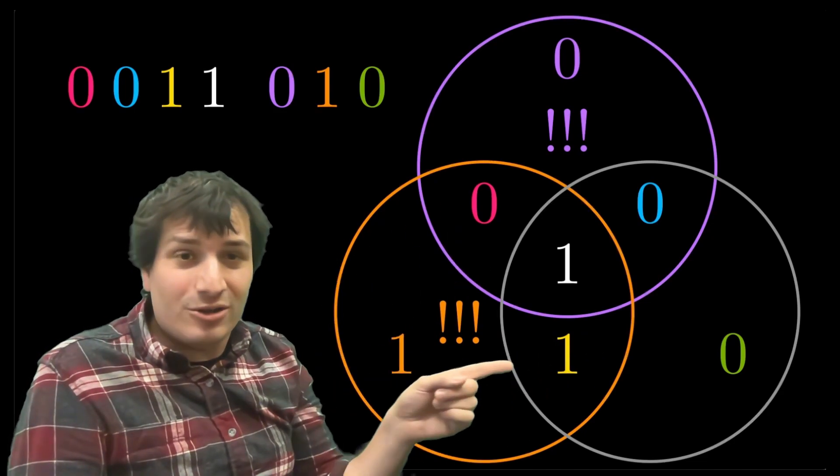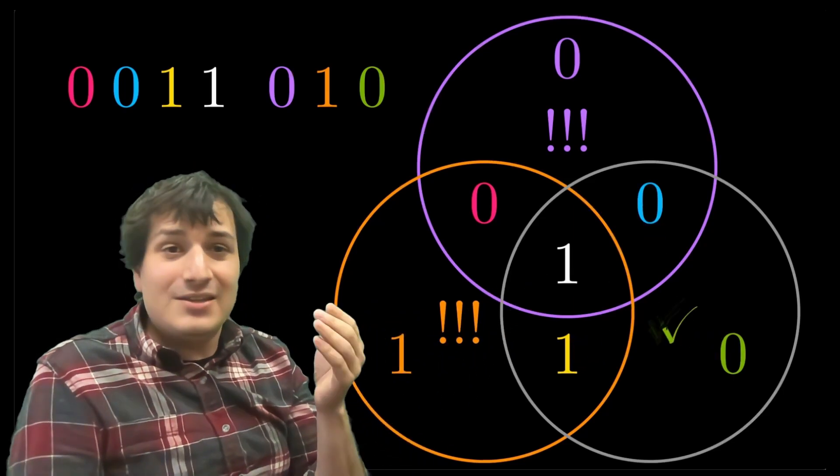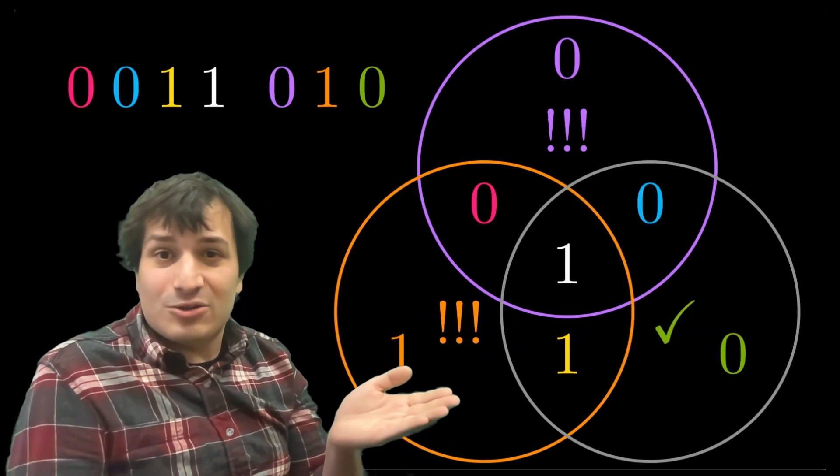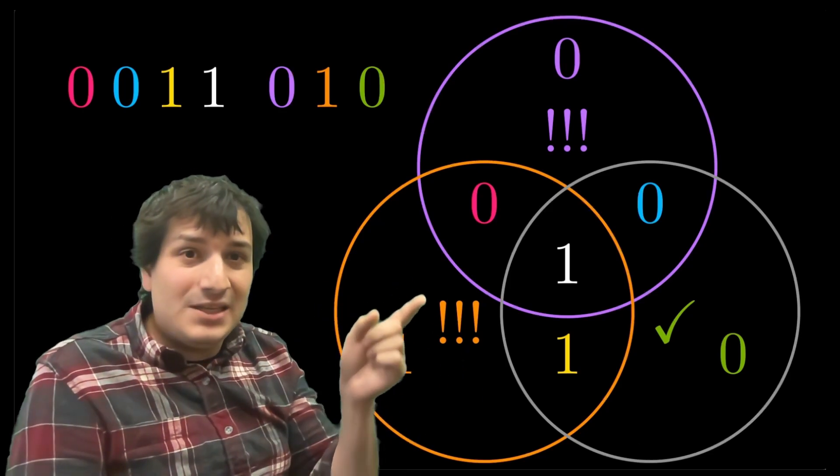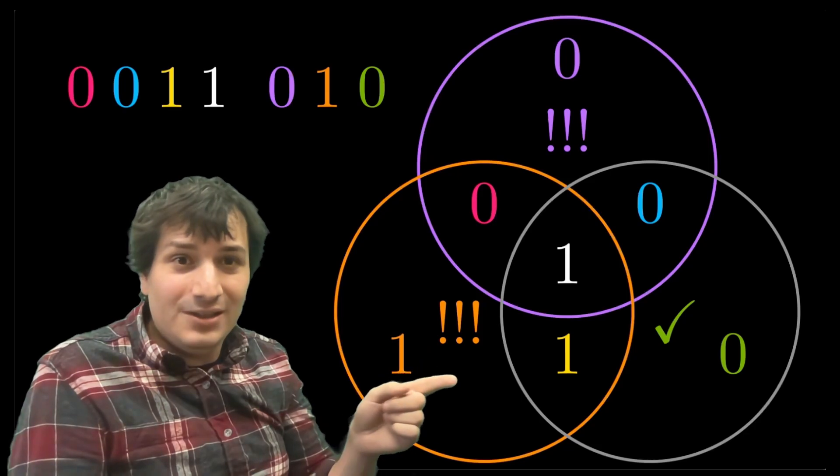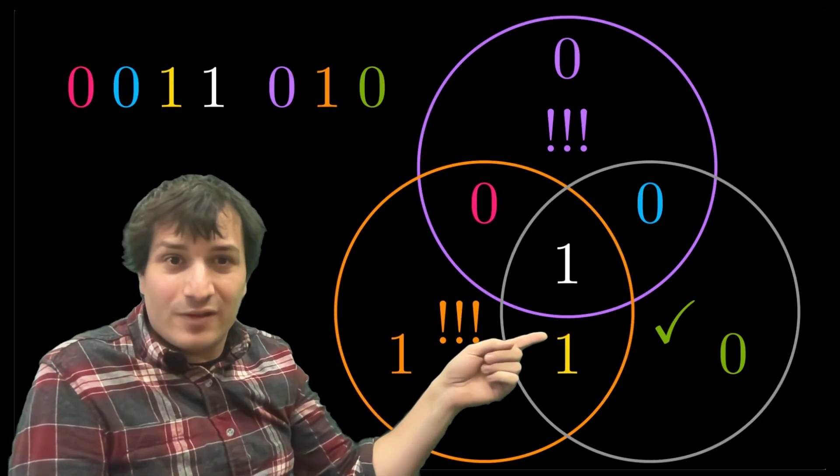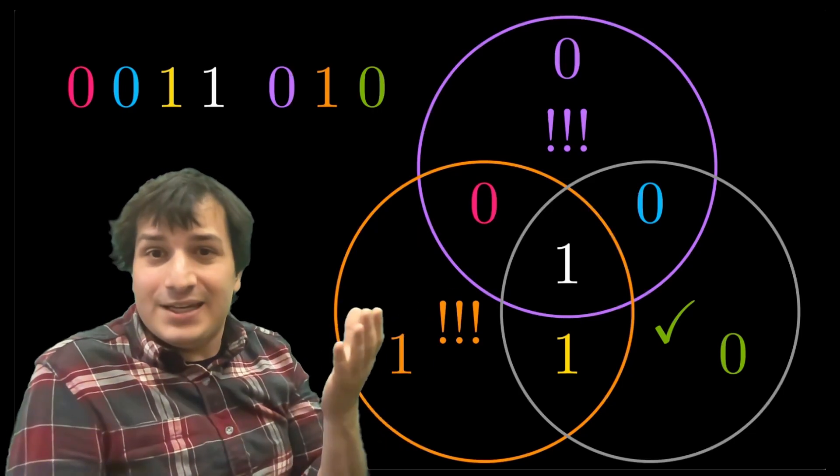On the other hand, if you look at that last circle, there's no mistake over there. One plus one is two, which is even. This obeys the rule that the sum of every circle must be even. So what does Bob see? Bob sees there's a mistake somewhere in the purple circle. There's a mistake somewhere in the orange circle. And there's no mistake over there on that circle on the right because that one worked out.